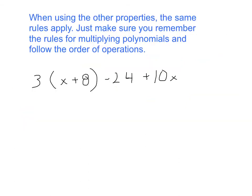When using the other properties, the same rules apply. Just make sure you remember the rules for multiplying polynomials, following the order of operations. So if you remember, the property we use here is called the distributive property. We take 3 and multiply that times x to get 3x, following the order of operations, parentheses first.